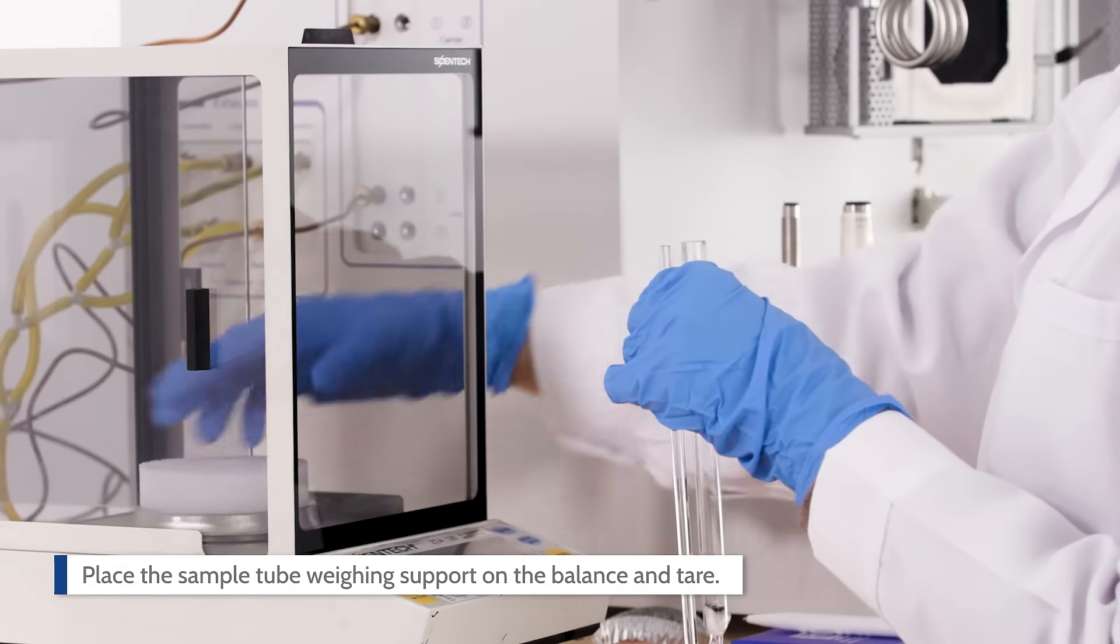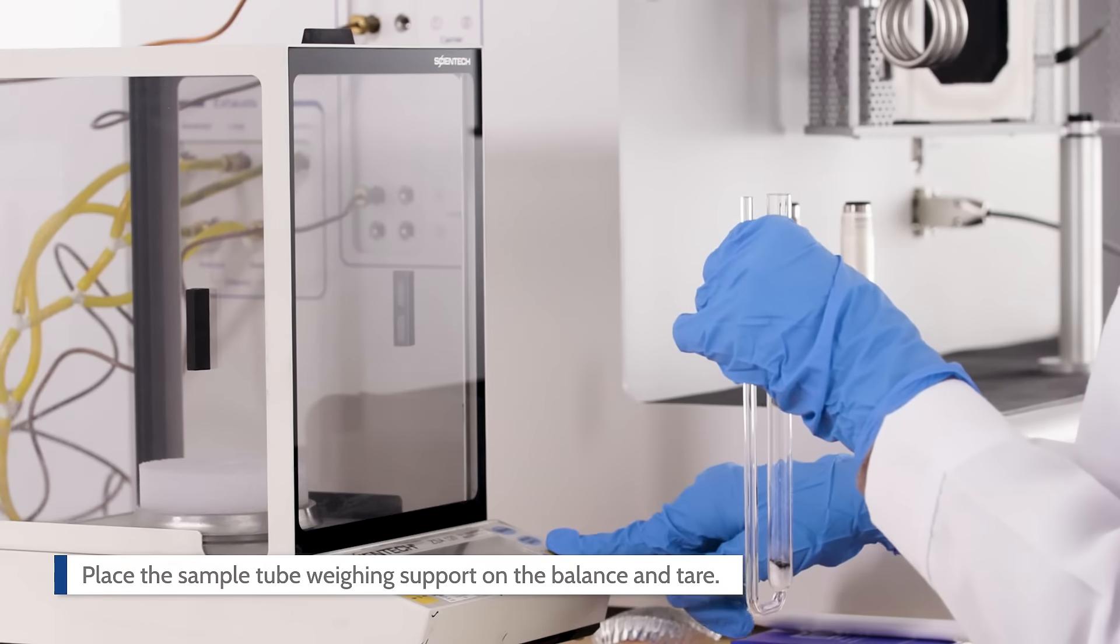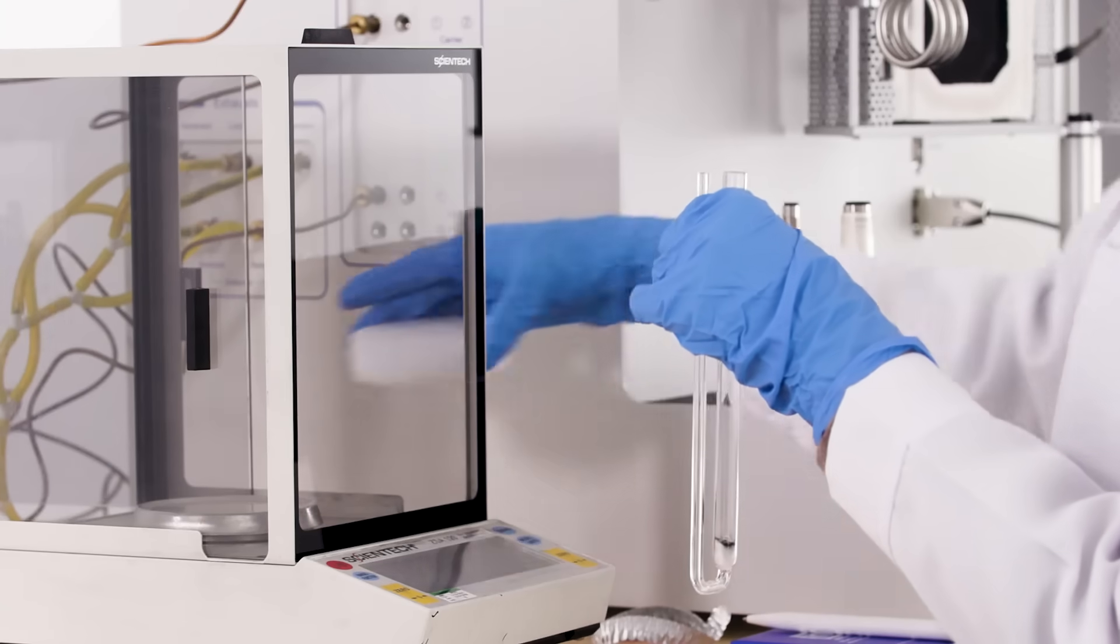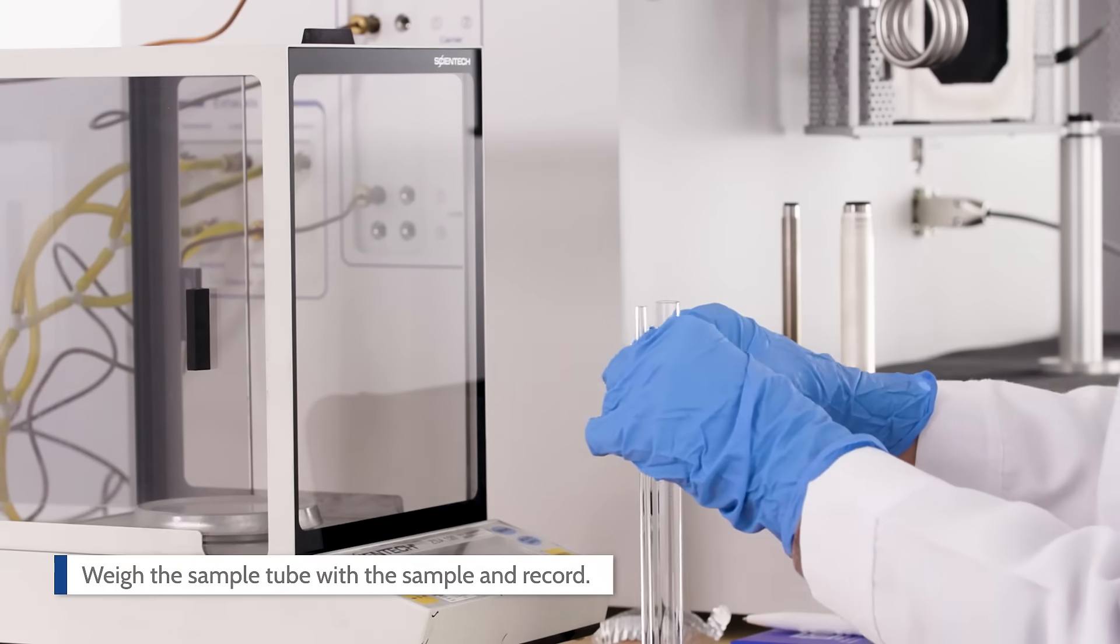Place the sample tube weighing support on the balance and tare. Weigh the sample tube with the sample and record. Now the sample tube is ready to be attached to the instrument.